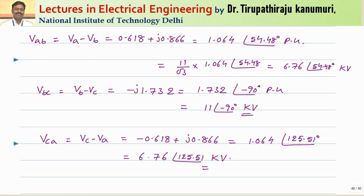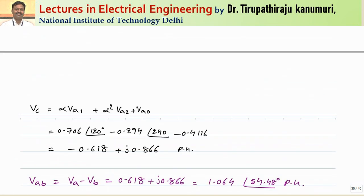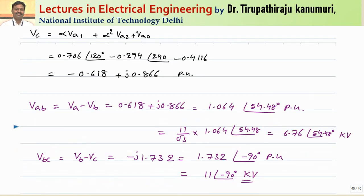In this way you have to solve for the case of LG fault. In our current case we have taken all possible cases — with fault impedance, neutral impedance, and all cases. If some of these values are 0, accordingly you can replace them. I hope the line-to-ground fault concept is completely clear to you. If you still have any queries, you can leave your comments in the comment section below. Thank you very much.